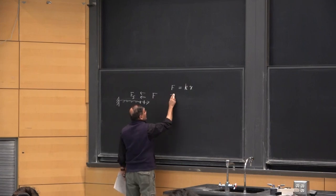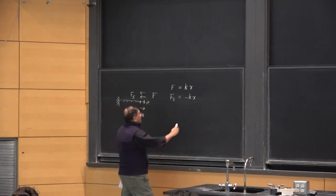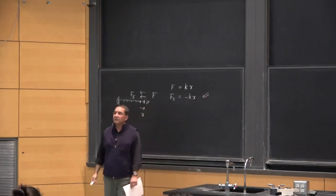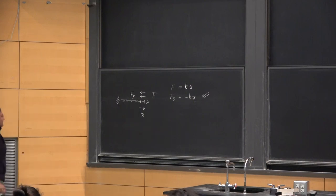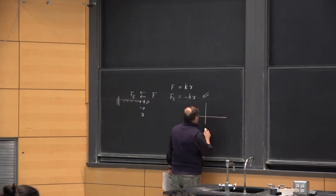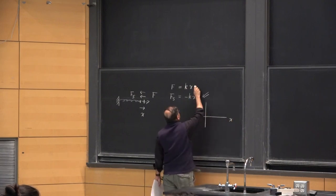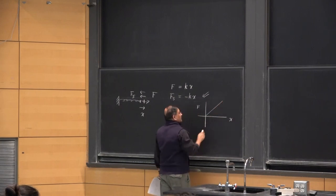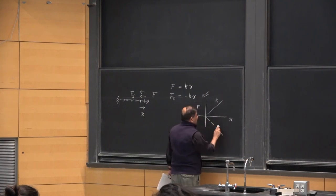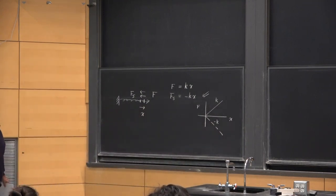Since Fs is equal and opposite to F, Fs therefore is minus KX. We are more interested in the force on the spring, so this equation is what we'll worry about when we talk about what the spring does. If you make a plot of force versus X, as far as what I am doing, it'll go like this with slope K, whereas what the spring is doing, it'll go with slope minus K. So this is the spring force law.